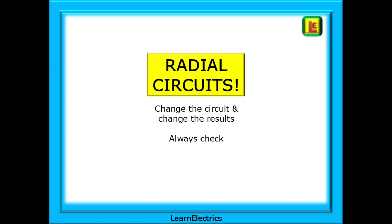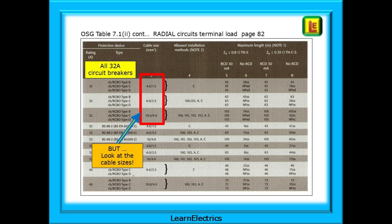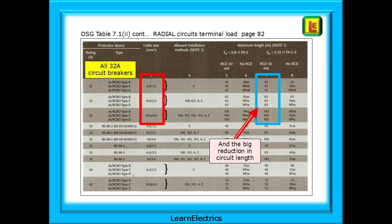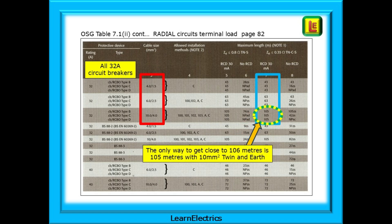A heads up about radial circuits - if you change the circuit, you will change the results, so always check. This is the same Table 7.1.2, but page 82, showing radial circuits with a terminal load - in other words, all the load is at the furthest end of the circuit. Think of a shower or cooker circuit; it's all at the end - a terminal load. The red box shows 32 amp breakers again, but now look at the cable sizes: 4, 6, and 10 square millimetres, and look at the big reduction in circuit length. For the radial circuits shown, the only way to get close to 106 metres is 105 metres with 10 square millimetre twin and earth. Ring and radial circuits must be treated differently, and we should always check before simply splitting a ring into two radials - sometimes it won't work safely.